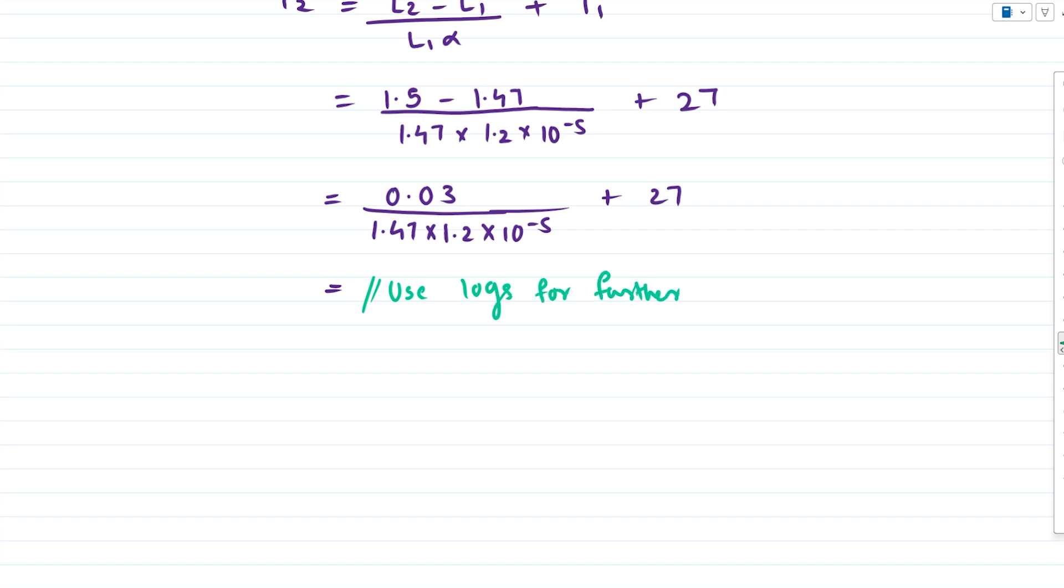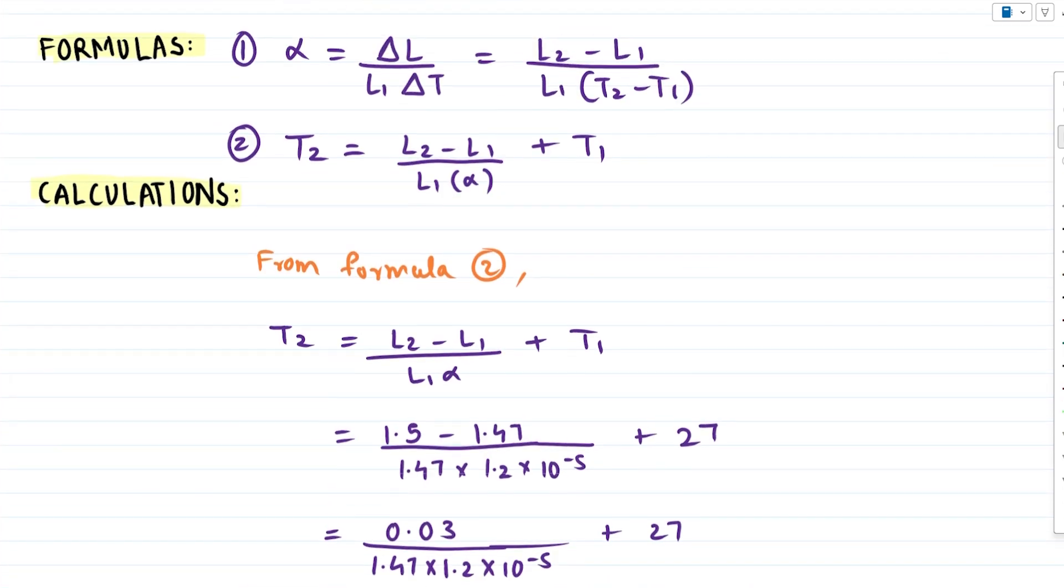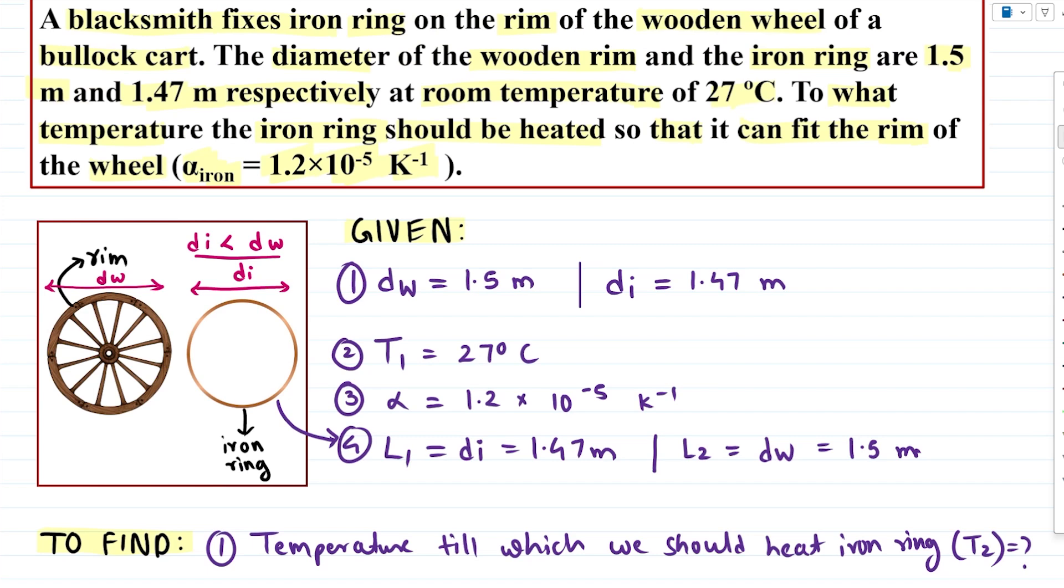But for the video purposes we'll skip that process and directly give the answer. If you were to calculate all this, this quantity comes out to be 1707 plus 27, and then we do a simple addition we get 1727.7. So this is the temperature for which our iron ring must be heated if we wish to attach this ring on our wooden wheel. That's a very big temperature.